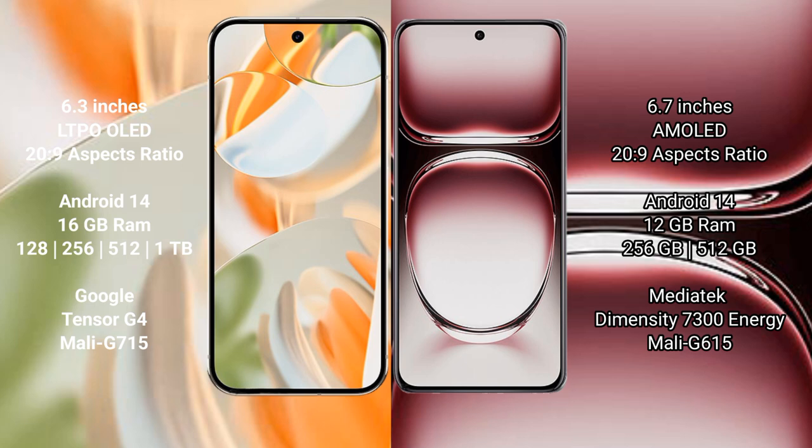The Google Pixel 9 Pro runs on the Android 14 operating system. The Oppo Reno 12 Pro also runs on the Android 14 operating system.